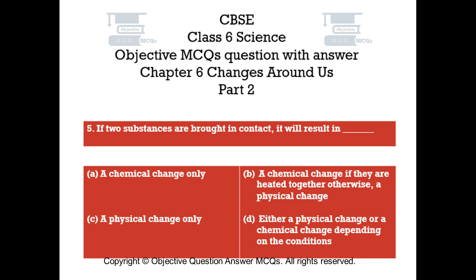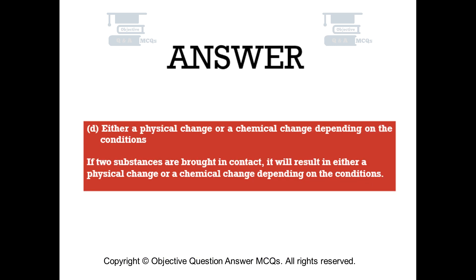Question number 5. If two substances are brought in contact, it will result in — Option A: a chemical change only. Option B: a chemical change if they are heated together, otherwise a physical change. Option C: a physical change only. Option D: either a physical change or a chemical change, depending on the conditions. The right answer is Option D: either a physical change or a chemical change, depending on the conditions.